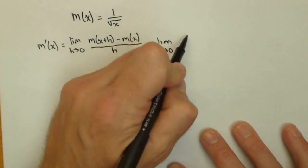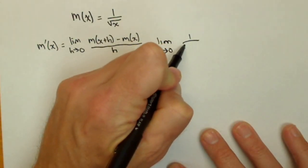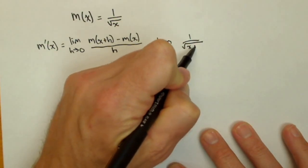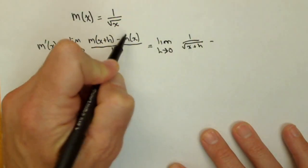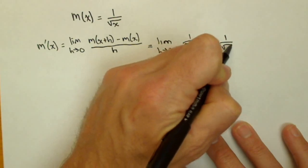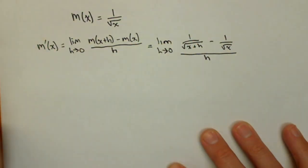So, m of x plus h is our function with x plus h as an input. So, 1 over square root of x plus h minus m of x, which is just 1 over square root of x, all over h.